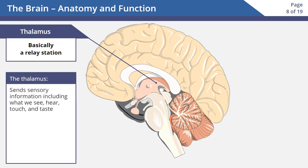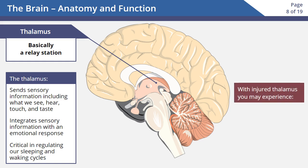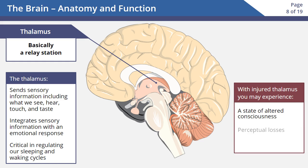The thalamus is basically a relay station. It sends sensory information — including what we see, hear, touch, and taste — onwards to other parts of the brain. It also integrates sensory information with an emotional response and is critical in regulating our sleeping and waking cycles. Someone with an injury to the thalamus may experience a state of altered consciousness or perceptual losses.